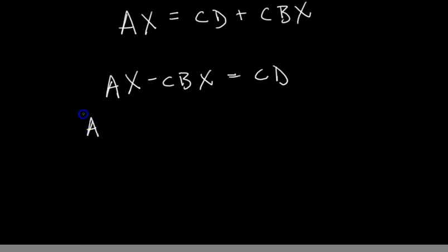So what do I mean? When I factor out an X, I get A minus CB. But I can't put the X here. I have to put the X here. Because it's being right multiplied in both of these terms. Okay, the right hand side doesn't change.